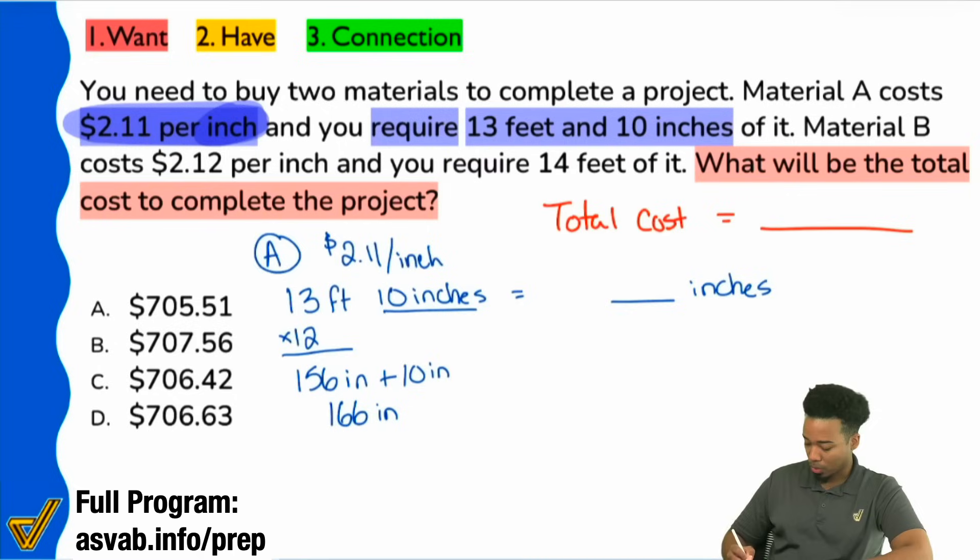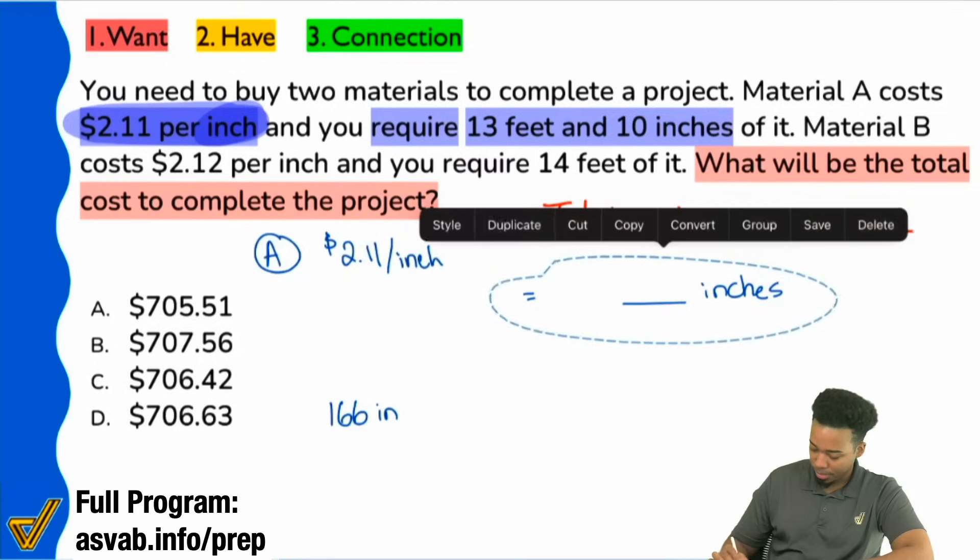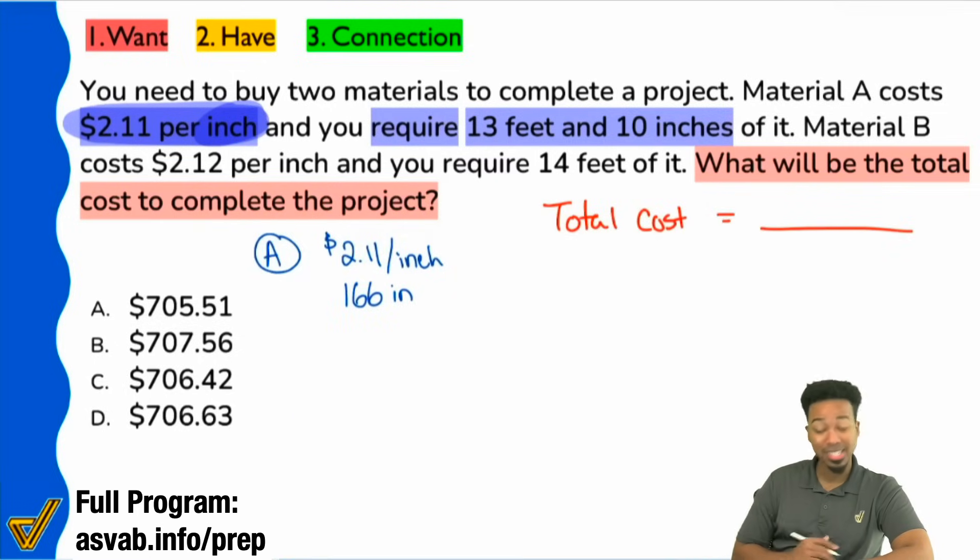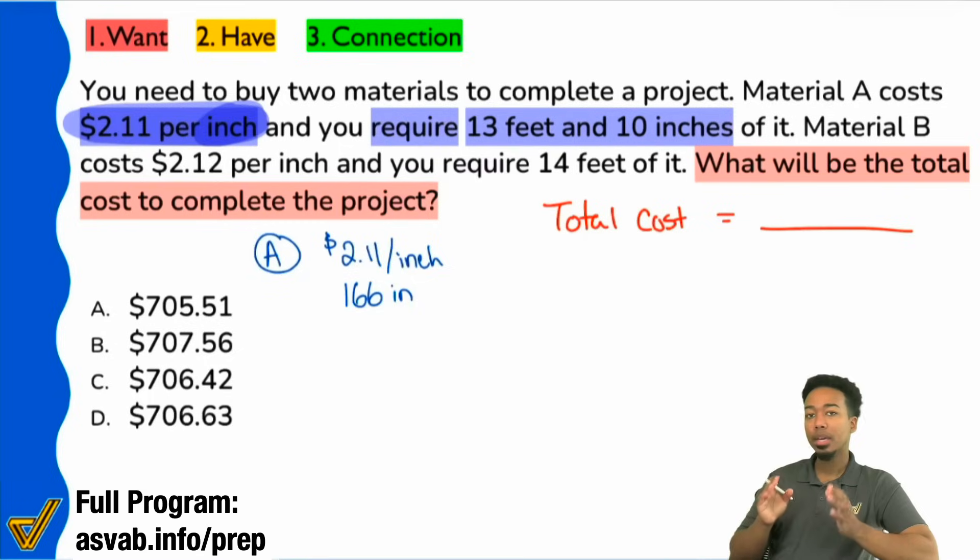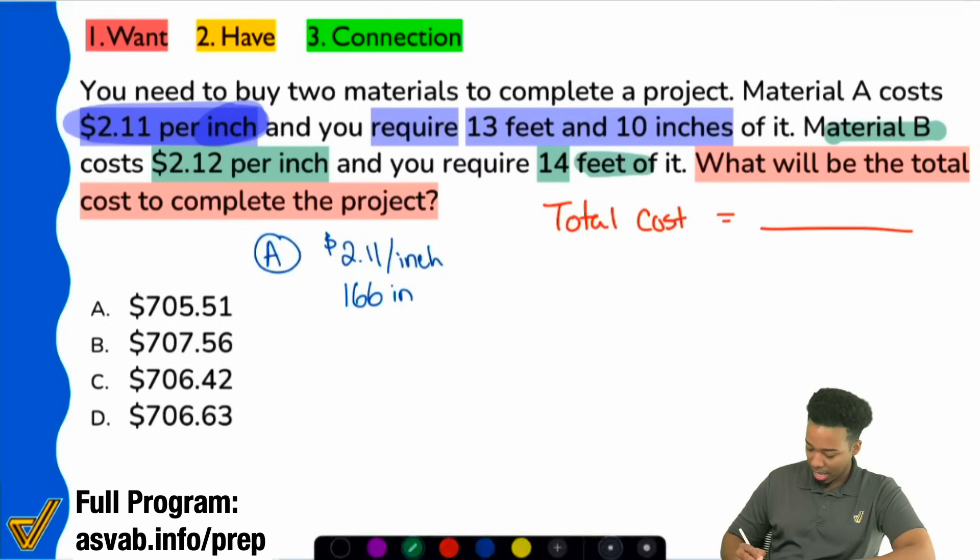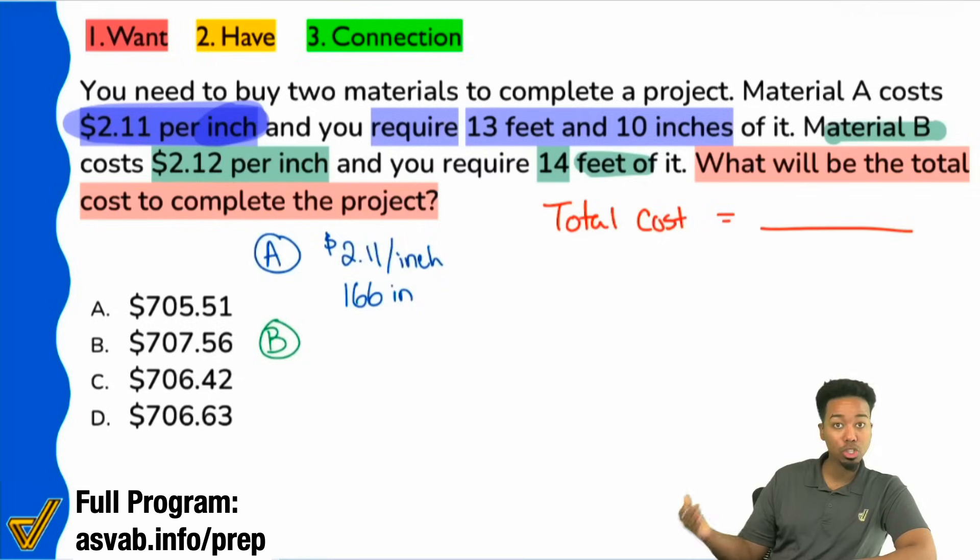Perfect. Now that we've converted, you can pause the video if you want to write down the rest. But now that we've converted, we are good. I'm going to take all this and delete it. That's going to be 166 inches. Those are the two values that I'm going to be multiplying together. Then for part B, here's what I'm also going to do. And you're going to be in for a surprise in a couple of moments. If you're going to be looking to solve this all the way through, actually, there's going to be a much shorter way to do it because of the way that the question is set up. But let's go ahead and take a look here. Material B, that's going to be $2.12 per inch, and we need 14 feet of it.